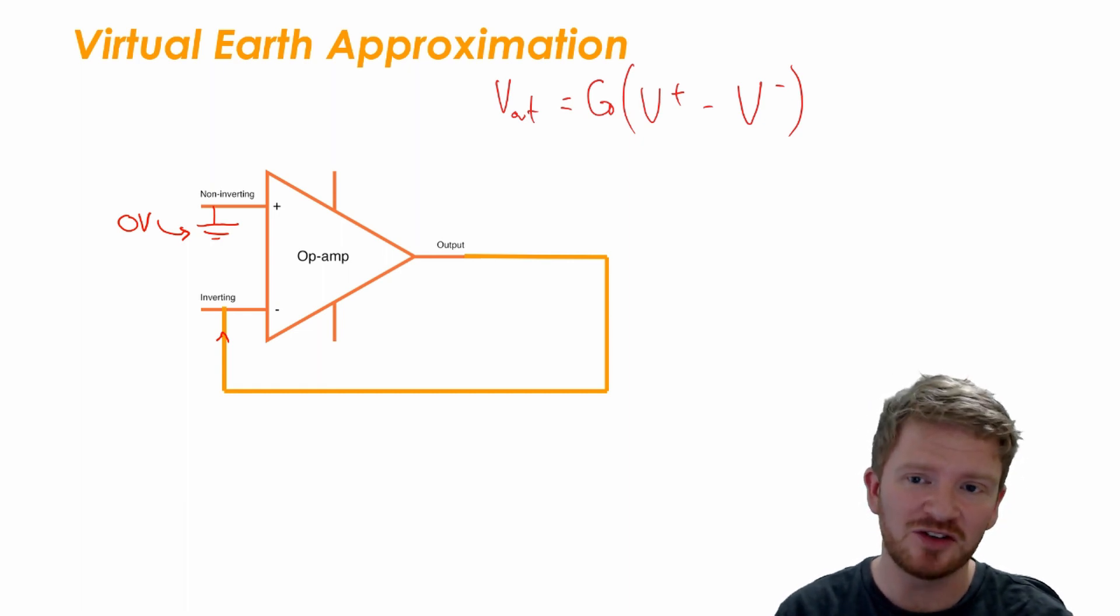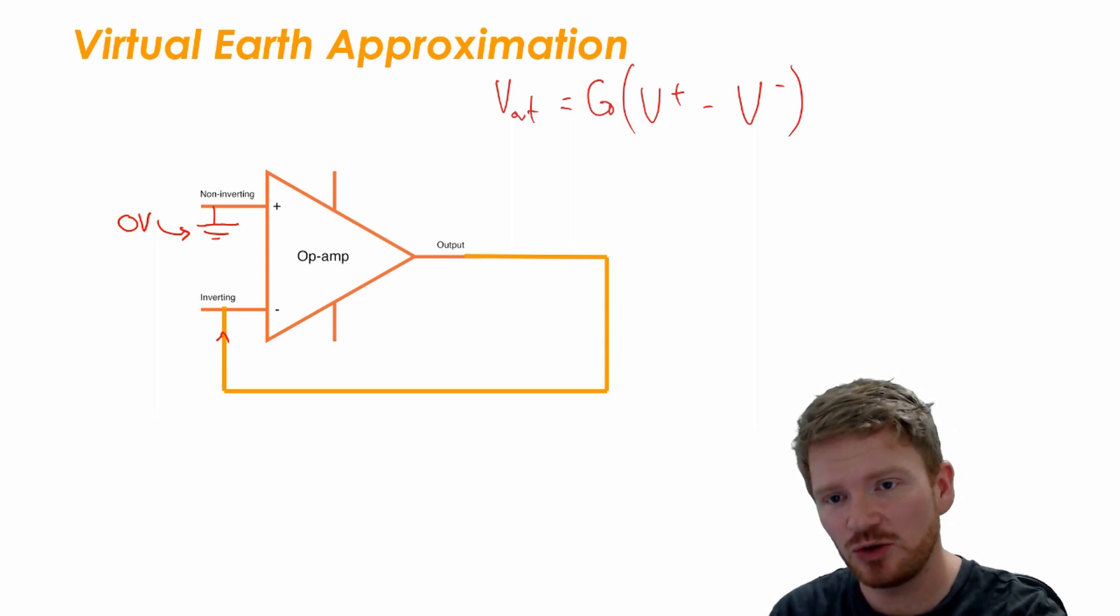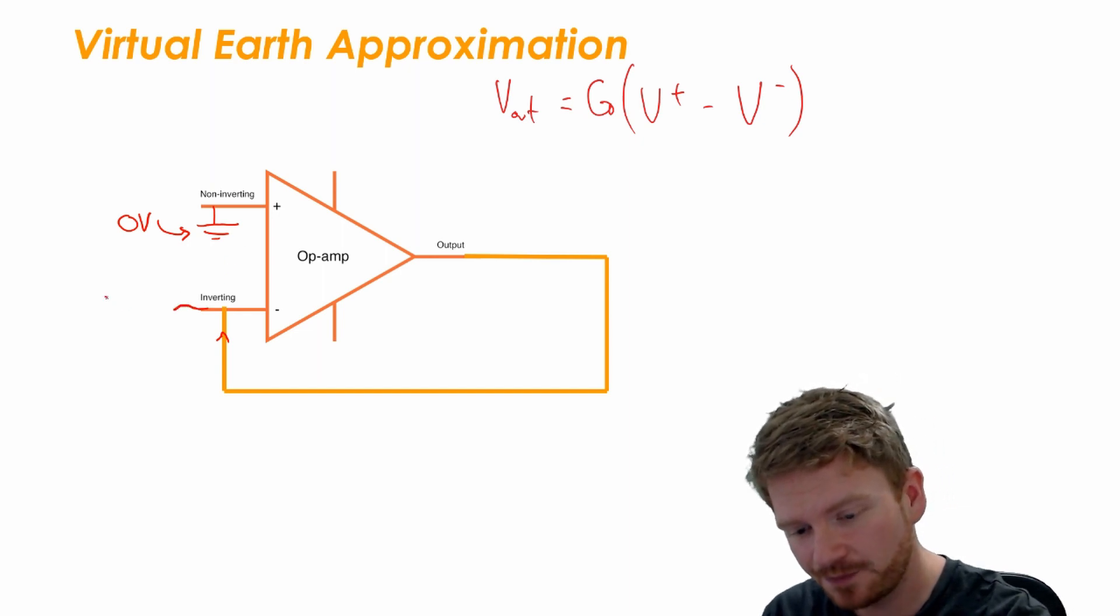You just have somewhere on your circuit board that you say is zero and you connect any devices that need an earth, like we've done here, a ground. You connected to that line and they all have a common point.